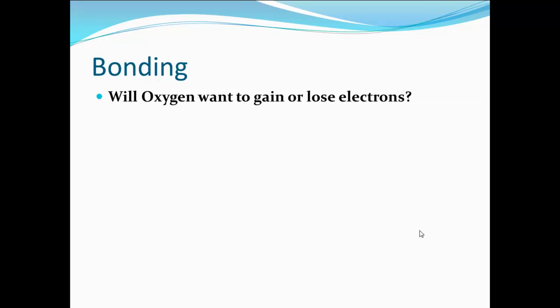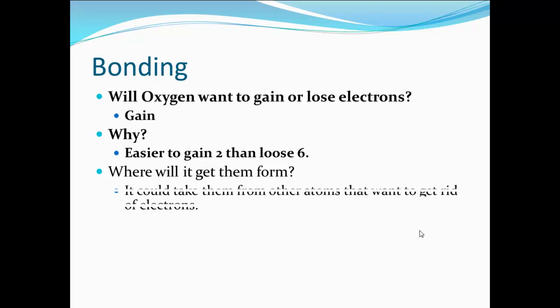Now, will oxygen gain or lose electrons? In this case, again, it wants to do what's easiest. It's going to gain electrons, because it's easier to gain two than it is to lose six. But where is it going to get those from? Where is it going to gain two electrons from? Well, that comes from other atoms. There are other atoms floating around there that want to get rid of electrons, because they're trying to empty their shells instead of fill it, like oxygen wants to.